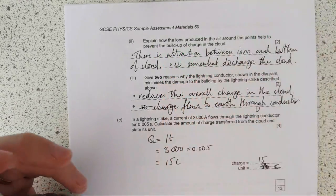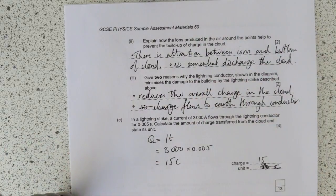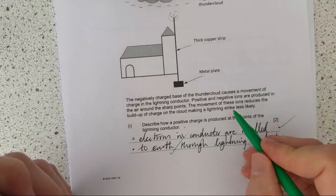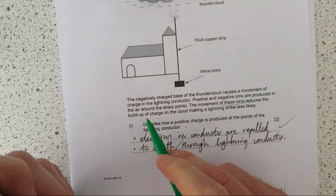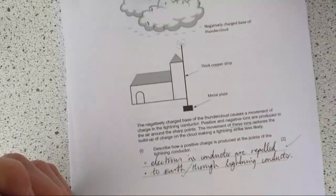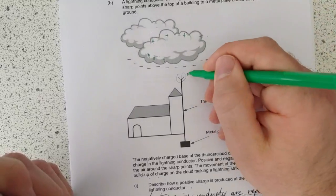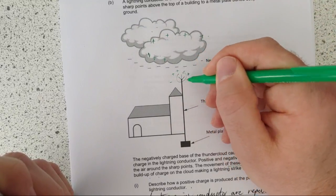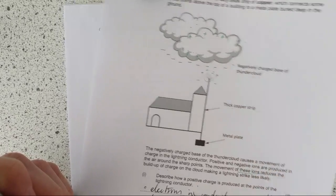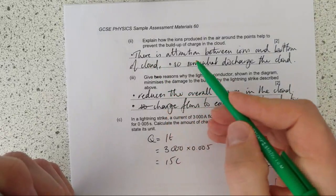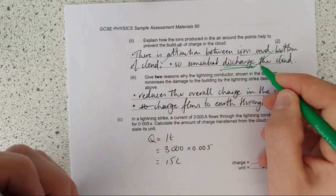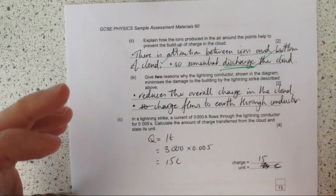So these are the points here, how do these things become positive? Well because the electrons in the conductor are repelled and where are they going - they're going to earth through the lightning conductor. So there's my two points. Again that's something that we do know - here's a whole thing about a lightning conductor, here's Mr. Tickle's biscuit tins but actually this is the stuff that you've been taught about static electricity, just apply it to that. So explain how the ions produced in the air around the points help prevent the build up of charge.